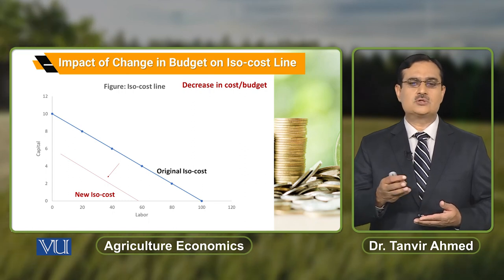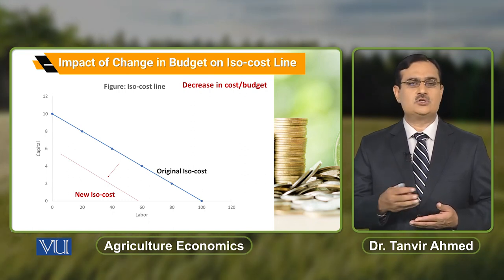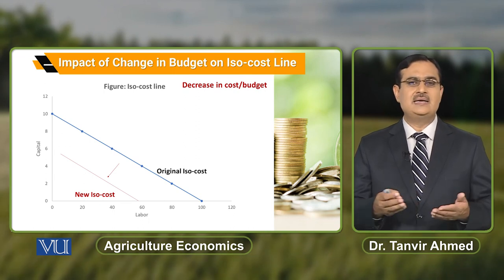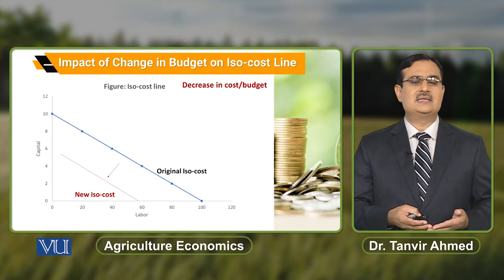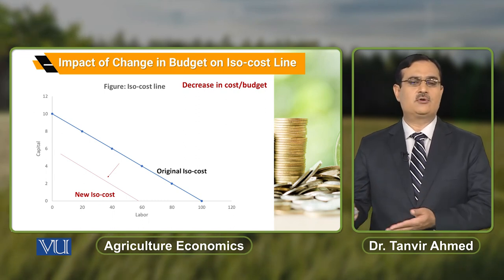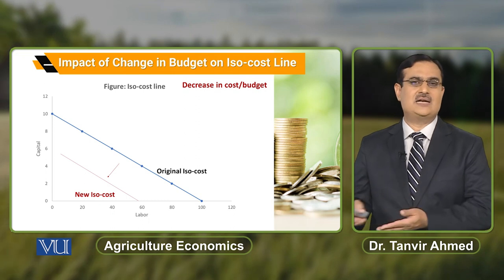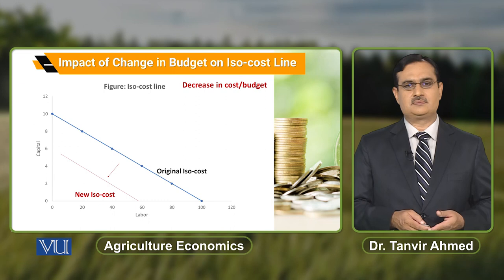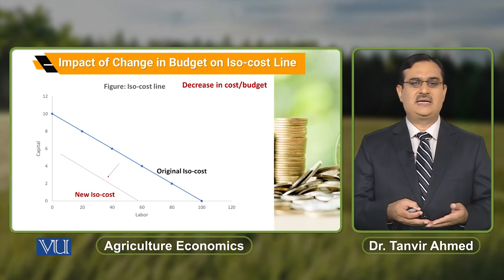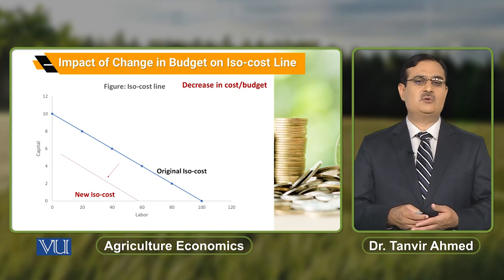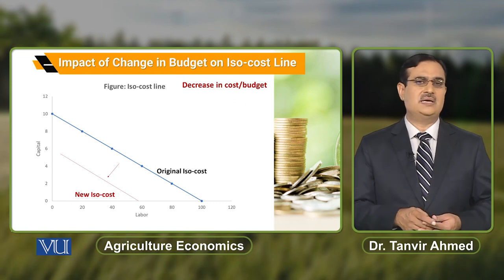Original ISO cost line کو ہم denote کرتے ہیں as the original ISO cost۔ اور اس diagram میں جو new ISO cost line ہے، یہ وہ ISO cost line ہے جو farmer کے پاس ہے under new allocation of resources — when he decreases the allocation of resources for the purchase of labor and capital۔ اس decrease in allocation of resources یعنی budget کی وجہ سے ISO cost line will shift downward۔